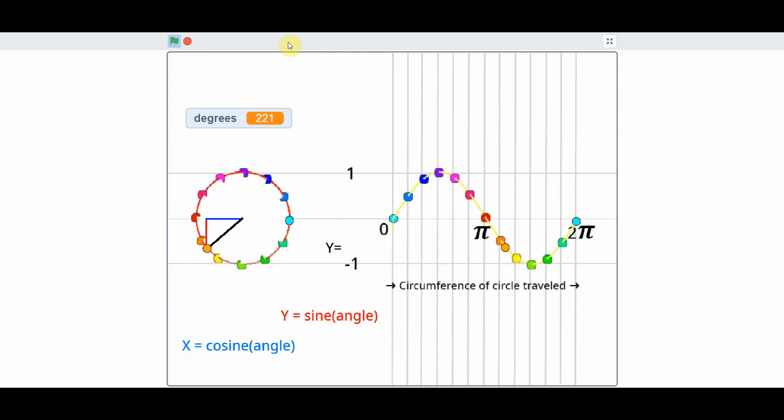And the cosine, which is the blue line here, is the length of the line on the X axis. A simple way to learn trigonometry, the sine wave, and code.